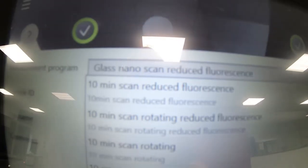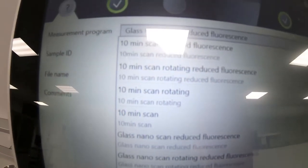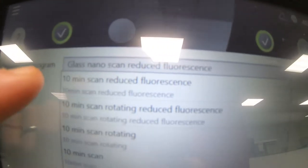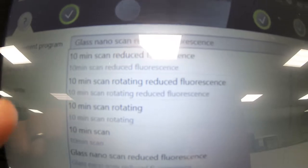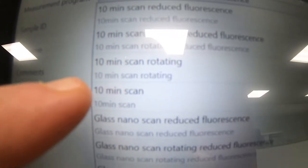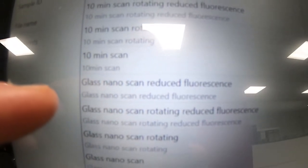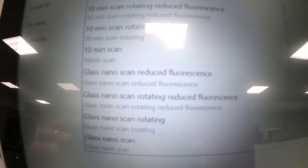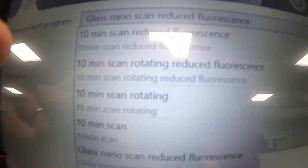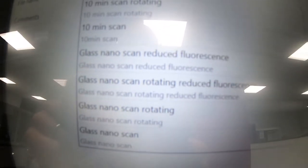Let's talk quickly about the measurement program. If I push this down here, you can see there are eight different scans that you can do, and they vary only slightly. We have a 10 minute scan with reduced fluorescence, a 10 minute scan that's rotating with reduced fluorescence, a 10 minute scan that's rotating, and a standard 10 minute scan. Then we have similar options but for glassy or nano materials. These samples are exactly the same as these except they have a larger step size. The step size in these ones is 0.02, and the step size in these glass nano ones is 0.04. That is the only difference between them.